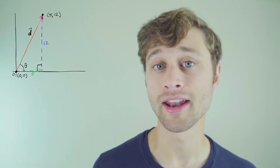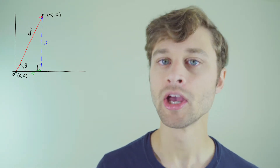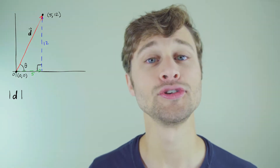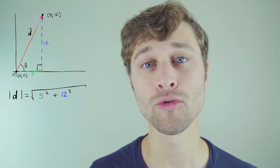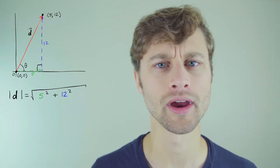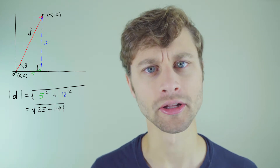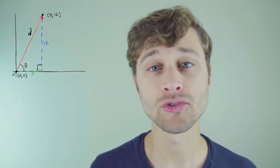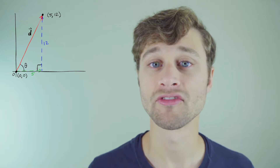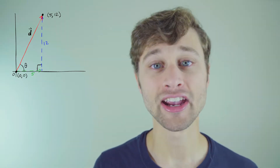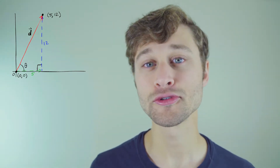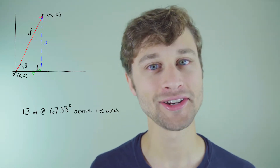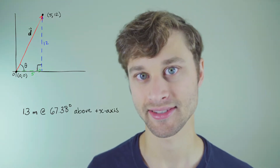Now, for good measure, let's go ahead and find the magnitude of this vector. We'll use the Pythagorean theorem to solve for this. The magnitude of vector d is equal to the square root of 5 squared plus 12 squared, which is equal to 13. So now we can fully describe our vector in terms of magnitude and direction. Vector d is equal to 13 meters, 67.38 degrees above the positive x-axis.